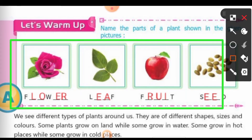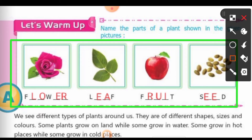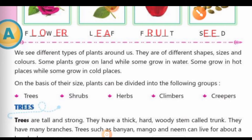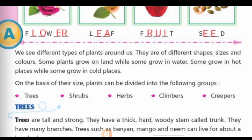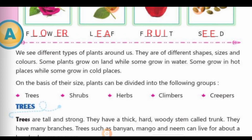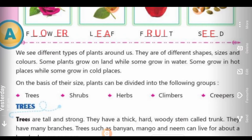I write here and you should fill in your book. We see different types of plants around us. Hum aapne 4o taraf different types ke plants seckte hai. They are of different shapes, sizes and colors. In ke color, shapes or size alag-alag hooti hai.